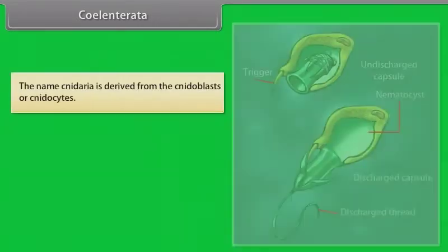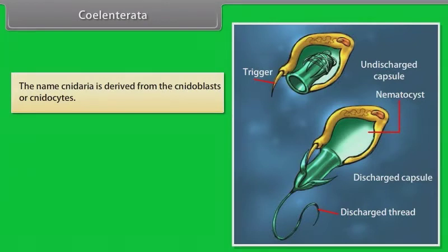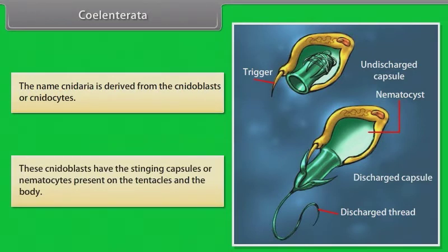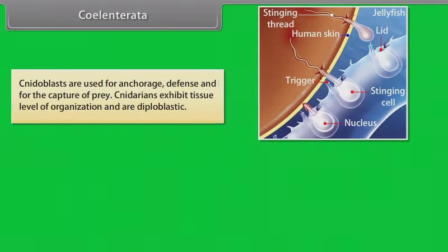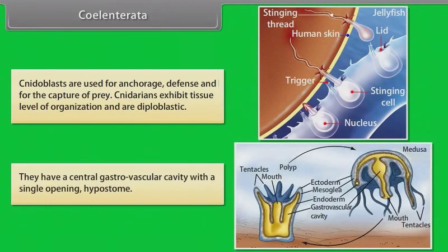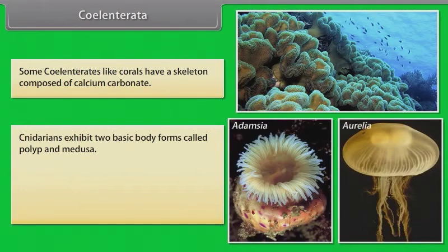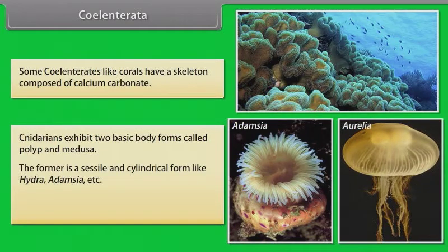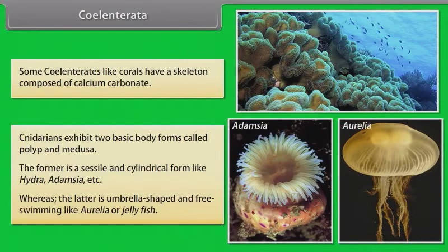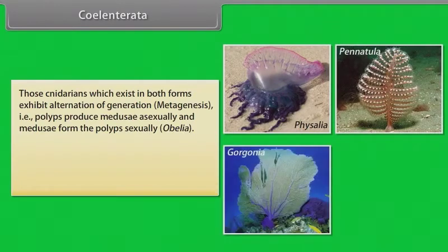The name Cnidaria is derived from cnidoblasts or cnidocytes. These cnidoblasts have stinging capsules or nematocysts present on the tentacles and body. Cnidoblasts are used for anchorage, defense and capture of prey. Cnidarians exhibit tissue level of organization and are diploblastic. They have a central gastrovascular cavity with a single opening called hypostome. Some coelenterates, like corals, have a skeleton composed of calcium carbonate. Cnidarians exhibit two basic body forms: polyp and medusa. The polyp is a sessile and cylindrical form like Hydra and Adamsia, whereas medusa is umbrella-shaped and free-swimming like Aurelia or jellyfish. Those cnidarians which exist in both forms exhibit alternation of generation, or metagenesis — polyps produce medusae asexually and medusae form polyps sexually. Example: Obelia.